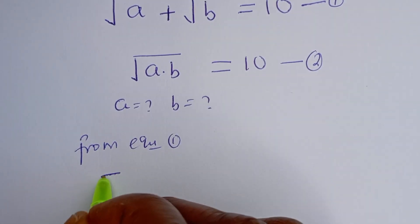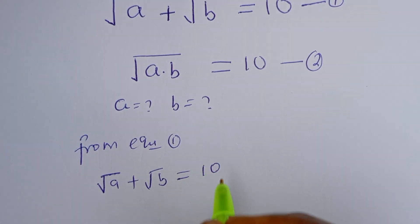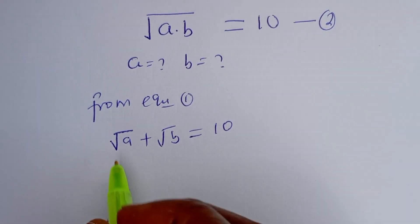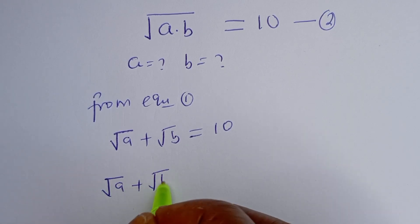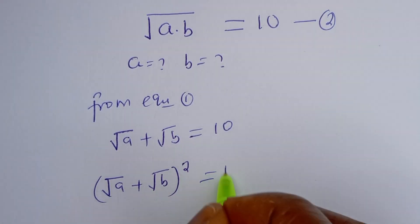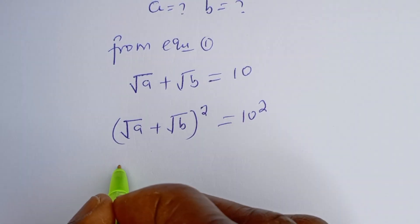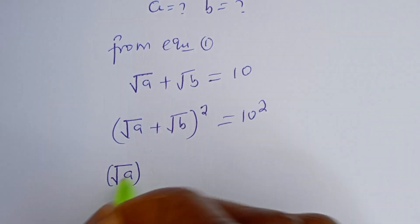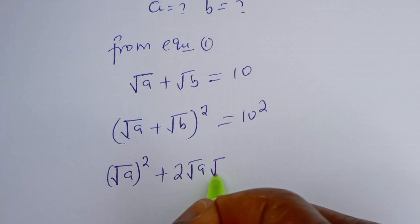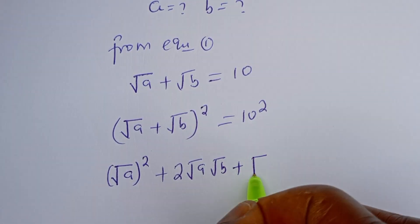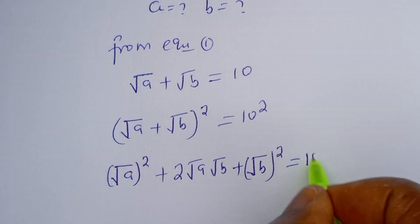From equation one, we have root A plus root B is equal to 10. Let's square both sides of this equation. We have square root of A plus square root of B, all squared, is equal to 10 squared. This gives root A squared plus 2 times root A times root B plus root B squared is equal to 100.